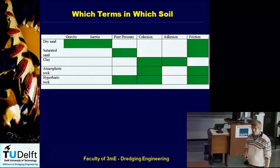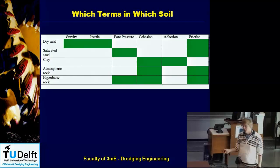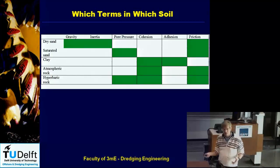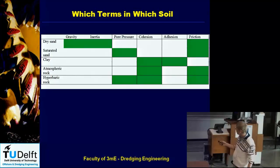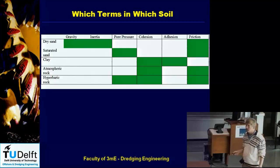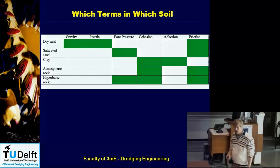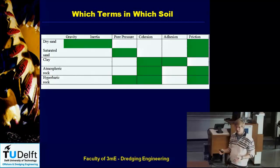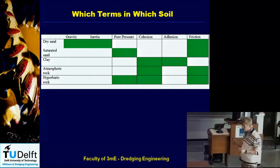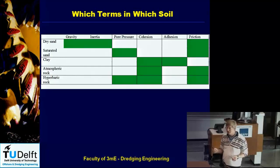Clay has cohesion and adhesion but no friction. Rock under atmospheric conditions: gravity, inertia, and pore pressures can all be neglected. Even though rock has some porosity and could contain water, the maximum underpressure at, say, 10 meters water depth is only 2 bar (200 kPa), while the compressive strength of rock ranges from 10 to 60 MPa. Even weak rock at 10 MPa is 50 times stronger than the maximum pore pressure effect, so it can be neglected.